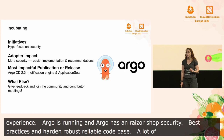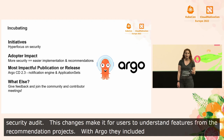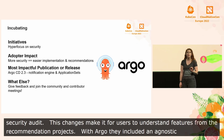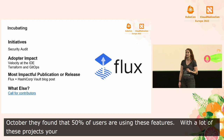These changes make it easier for existing users to understand and implement the new features and recommendations from the project. With Argo CD 2.3, they included an agnostic notifications engine and several other enhancements so it can be used by any cloud-native application, and since October, more than 50% of users are already using many of these new features. Your feedback and contributions are what drives such great changes, so be sure to contact those maintainers.